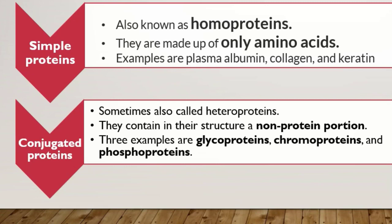Glycoproteins کے اندر carbohydrates اور proteins دونوں ہوتی ہیں. Chromoproteins کے اندر protein portion کے ساتھ کوئی prosthetic group یا co-factor attach ہوتا ہے. اسی طرح phosphoproteins کے اندر proteins کے ساتھ کوئی phosphorous atom attach ہوگا.